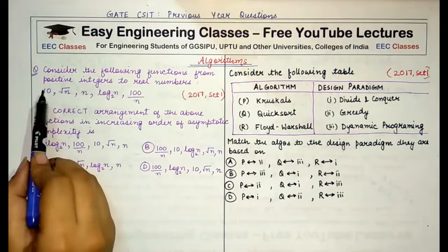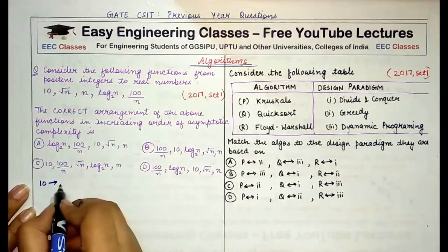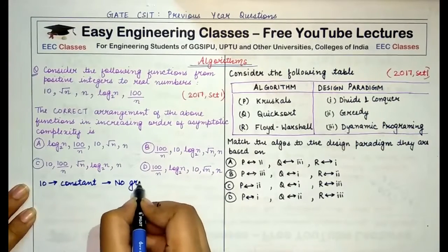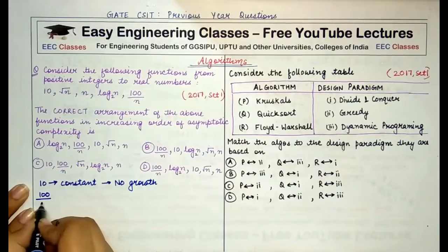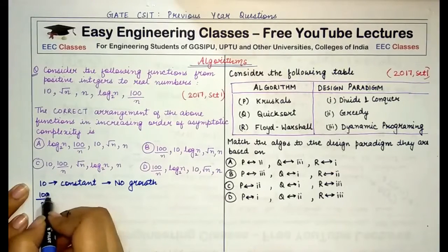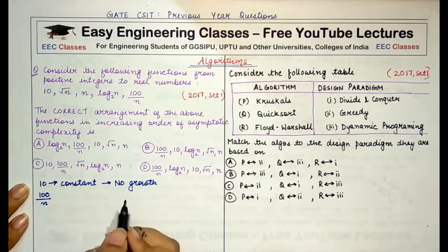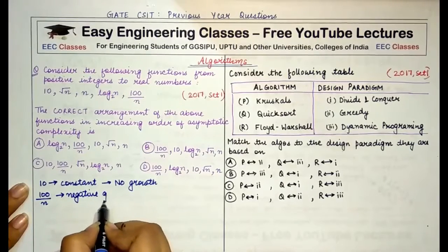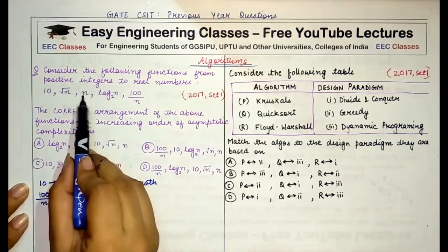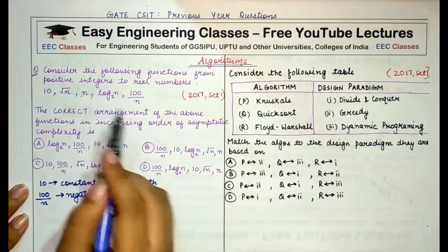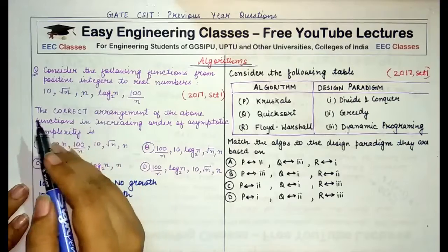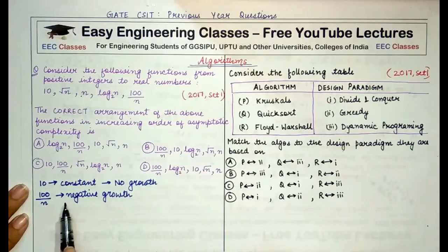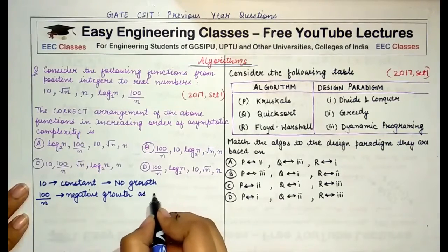As it is very clear from the options, 10 is a constant and it has no growth. Now coming to 100/n — if we remove 100 or consider it as a constant, it is actually (1/n) × 100, so 1/n has a negative growth as compared to the remaining functions: n, √n, and log₂n. These values will grow either slowly or quickly compared to each other, but compared to 100/n, all of them will be increasing, while 100/n will decrease as the value of n increases.